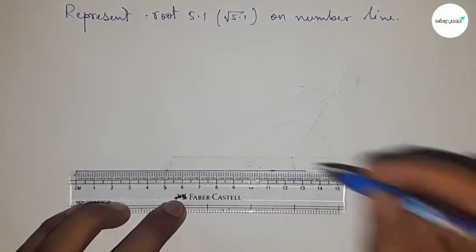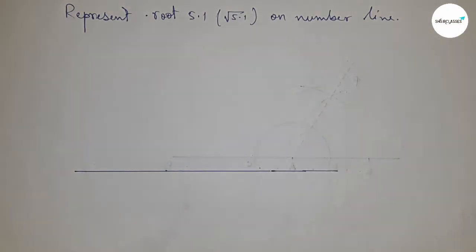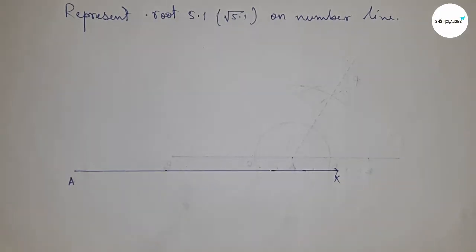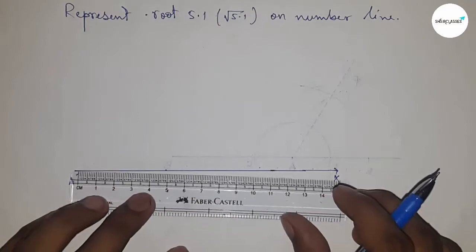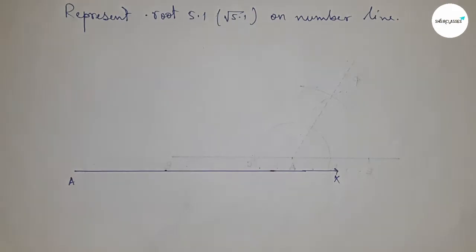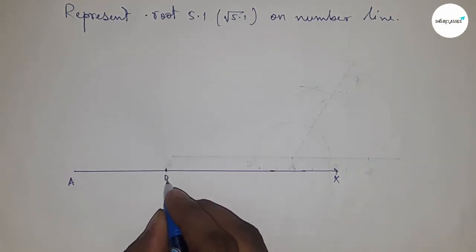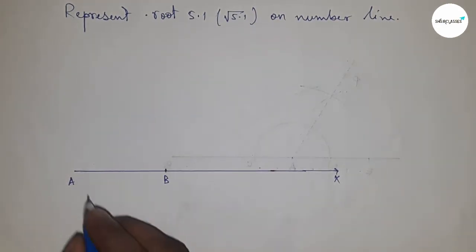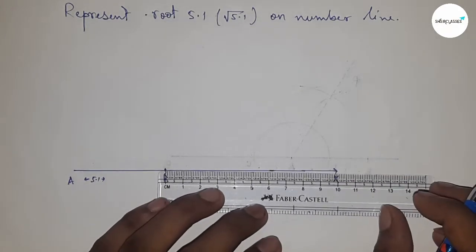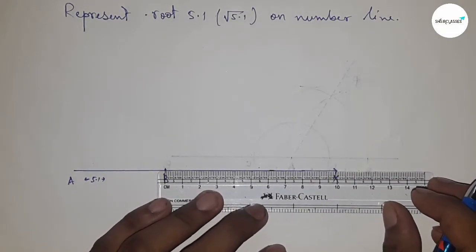First, draw a line of any length. This is the AX line. Next, take a length of 5.1 centimeters by scale, and mark it as point B. So the AB line equals 5.1 centimeters.